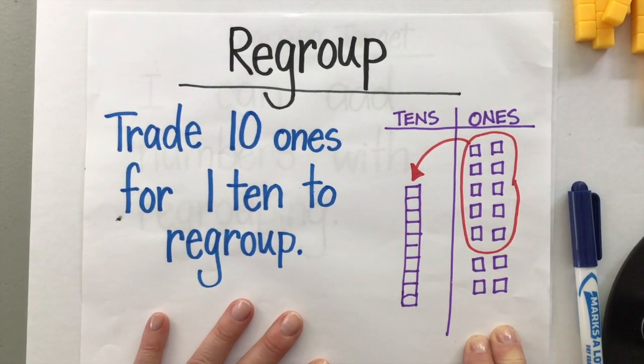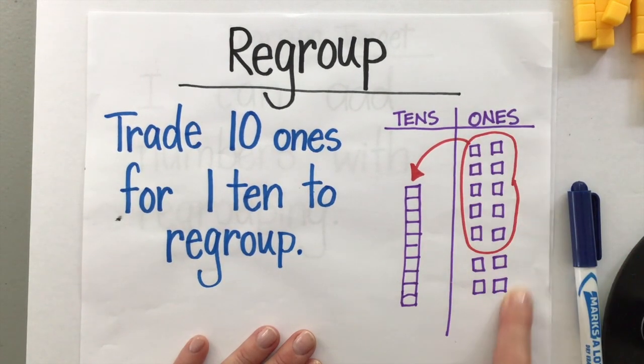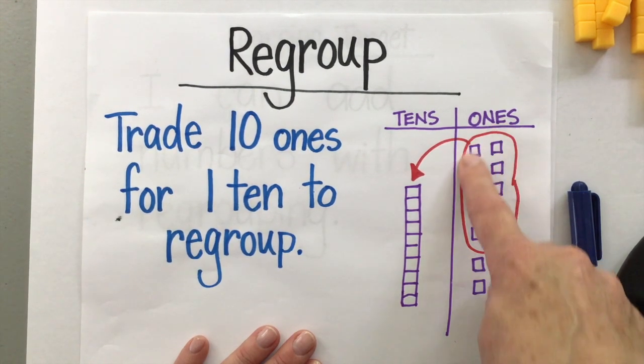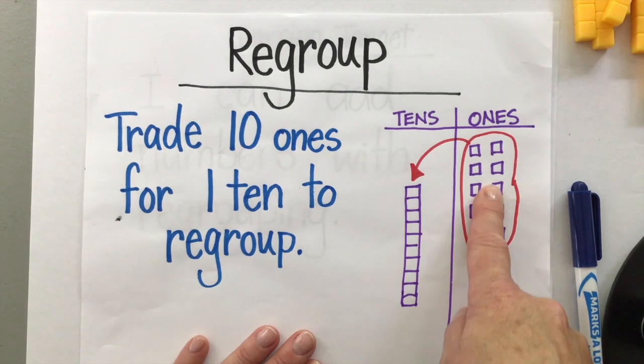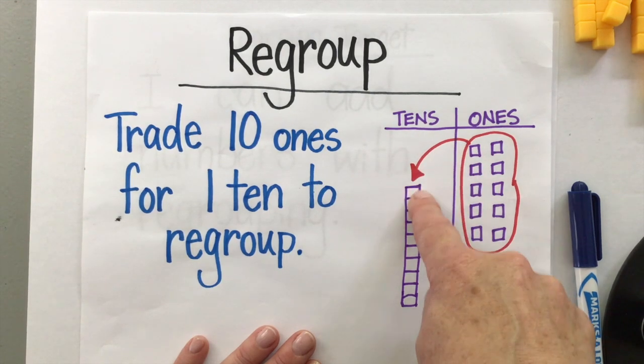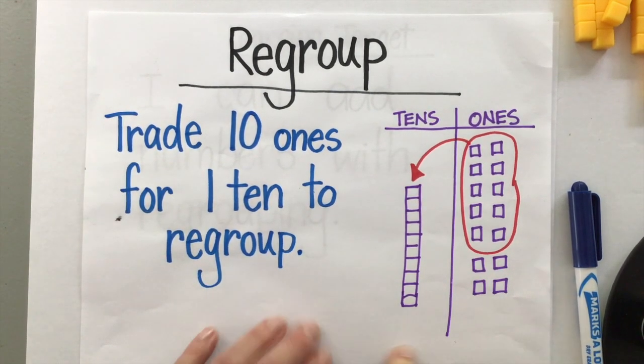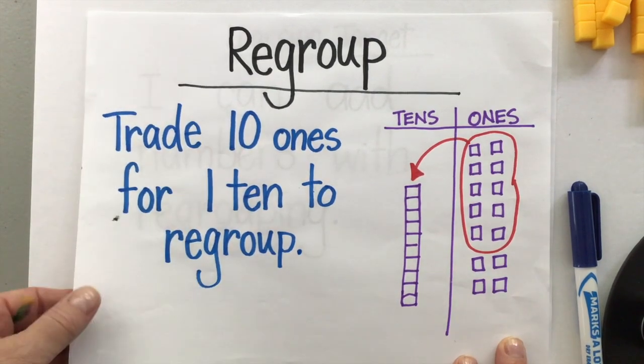What that means is when you're building a number and you end up with more than 10 in the ones column, you have to make a group of 10 and you have to send that group of 10 over to the tens column. And that's just simply called regroup.